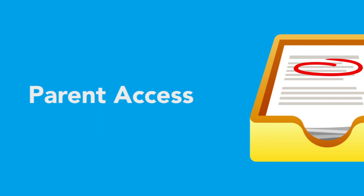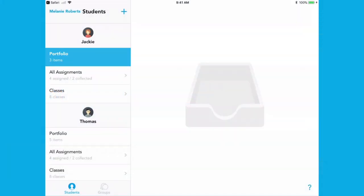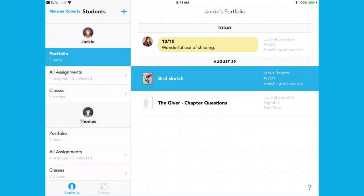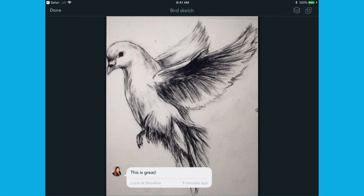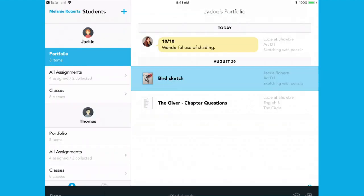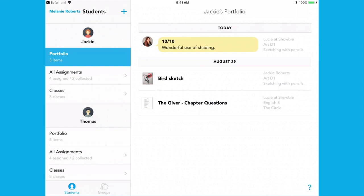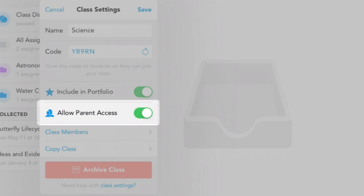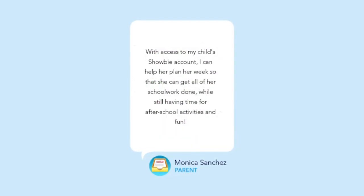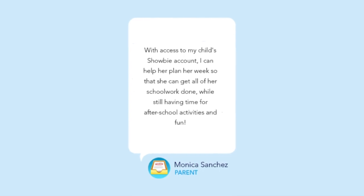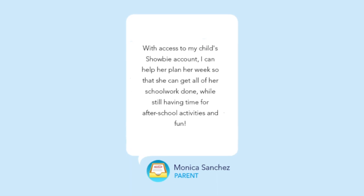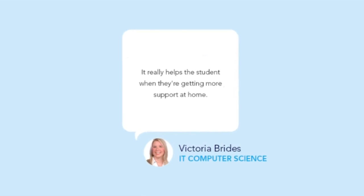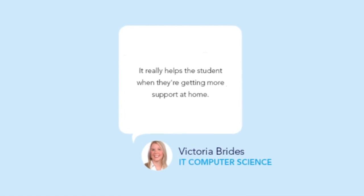Parent access is an easy way for parents to stay informed and involved with their child's progress, challenges, and accomplishments in school. Mobile updates directly from Showbie provide an easy and accessible way for parents to stay in the loop. With parent access, parents can view their child's portfolio and look through the feedback that they might have received. Parents can see what their child is currently working on, as well as any upcoming assignments that need to be done so students don't miss a due date. By toggling parent access on or off at the class level, you still decide what level of access parents have to work done in your classes. Monica Sanchez, a parent at Bishop Gorman, explains that with access to her child's Showbie account, she can help plan the week so her child can get all schoolwork done while still having time for after-school activities. Victoria Brides, IT and computer science teacher at Lively Grammar School in the UK, says it really helps students when they're getting more support at home.